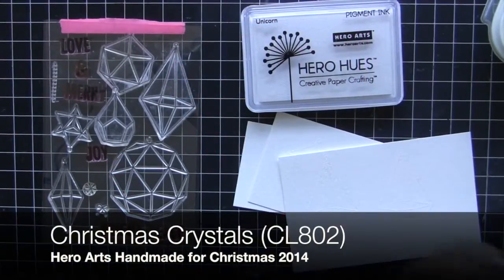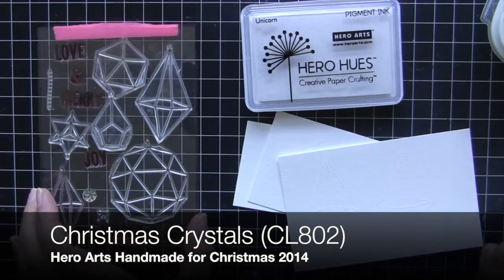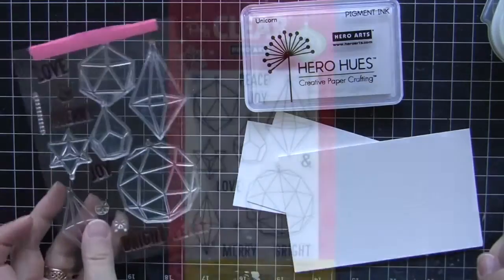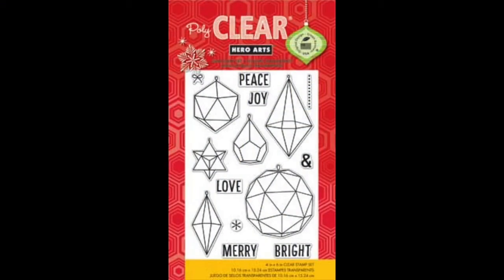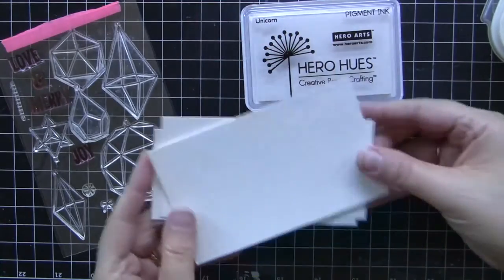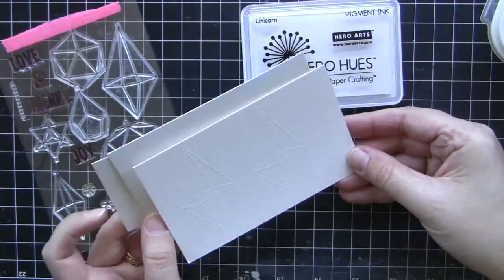This is one of my favorite sets from the new catalog. It's called Handmade for Christmas 2014 and I just love this set. There's so many things that you can do with it. It has a little bow that you can stamp on top of the ornaments and then it has a line of dots that you can use too. As you can see, my set is already well loved.